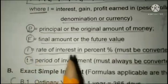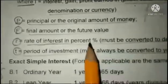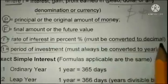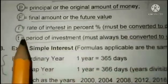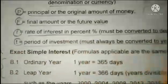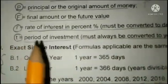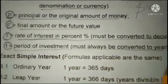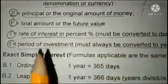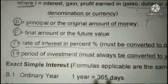We have R, the rate of interest in percent, which must be converted to decimal places. Otherwise, you'll get the wrong answer if you don't convert it. For T, the time period of investment, you also need to convert to years to answer the question correctly in a problem.